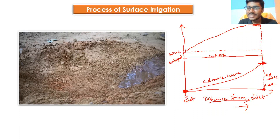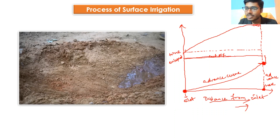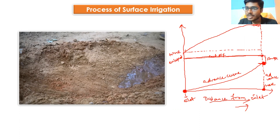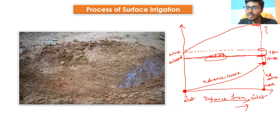The second phase is the storage or ponding phase — it is the time period from when the advance phase ends to when the water supply is cut off. The third phase is the depletion phase — it is the time gap between the cutoff of water supply and when recession starts. The recession phase is the time period during which water retreats towards the downstream end.